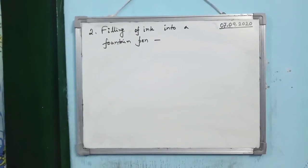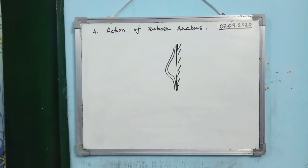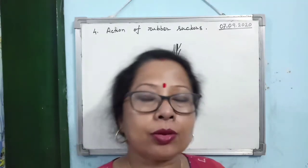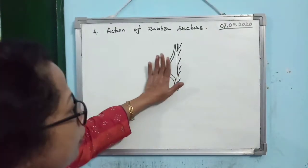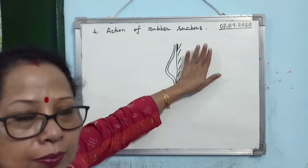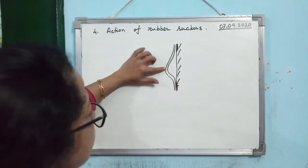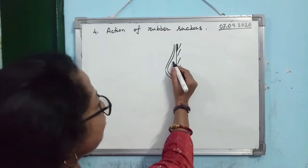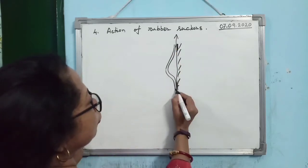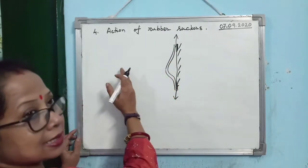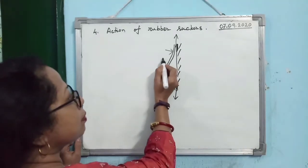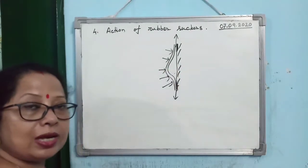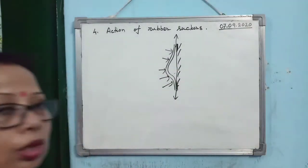Next is the action of rubber suckers. You press the rubber sucker on the wall — pressing the bulged portion. The air inside comes out through the rim. When you release it, outside atmospheric pressure acts while inside there is nothing. The atmospheric pressure presses and sticks the rubber sucker to the wall.